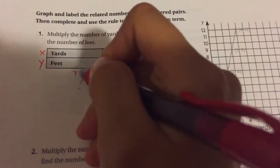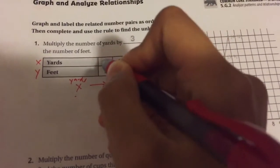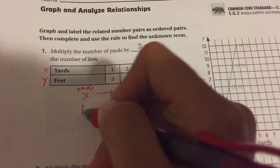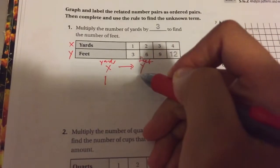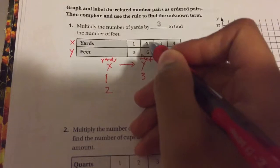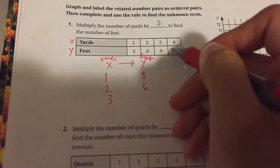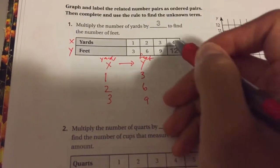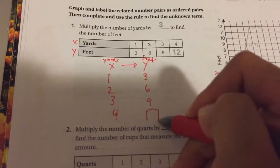These are our yards and our feet. They're telling you 1 yard is 3 feet, 2 yards, this is my X, is 6 feet, 3 yards is 9 feet. And so what is 4 yards equal? We need to find this.